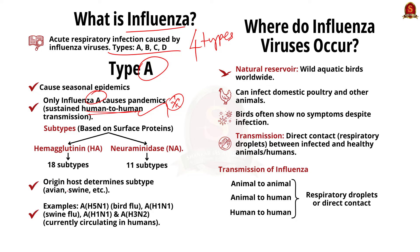Influenza type A viruses are classified into subtypes according to combinations of different virus surface proteins: hemagglutinin (H) and neuraminidase (N). So far there are 18 different hemagglutinin subtypes and 11 different neuraminidase subtypes. Depending on the origin host, influenza A viruses can be classified as avian influenza, swine influenza, or other types of animal influenza viruses. For example, avian influenza bird virus subtypes include A(H5N1) and A(H9N2), while swine influenza subtypes are also distinct.